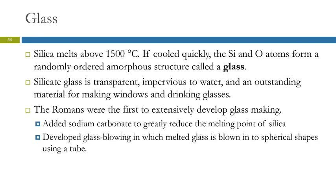Silicate glass is impervious to water, making it an outstanding material for windows and drinking glasses. The Romans were the first to extensively develop glass making — earlier peoples did make glass, but not extensively. What the Romans did was add sodium carbonate, which reduced the melting point of silica.